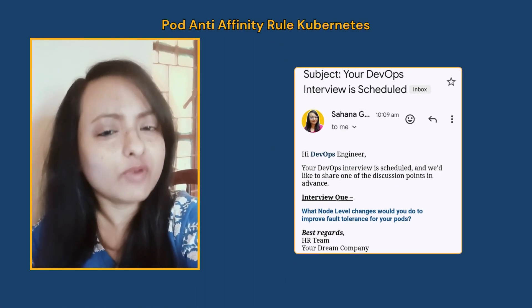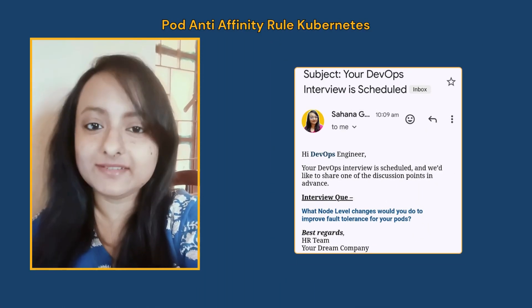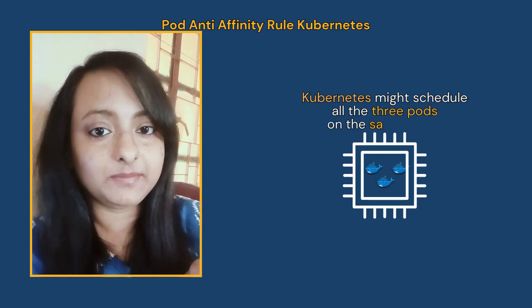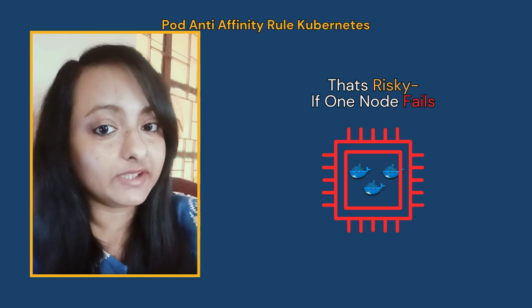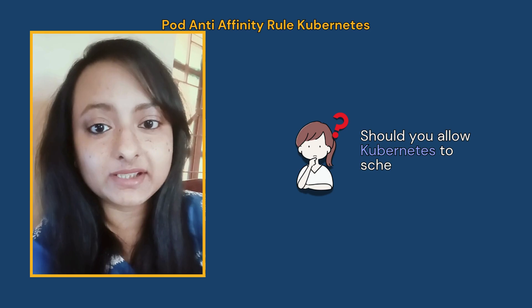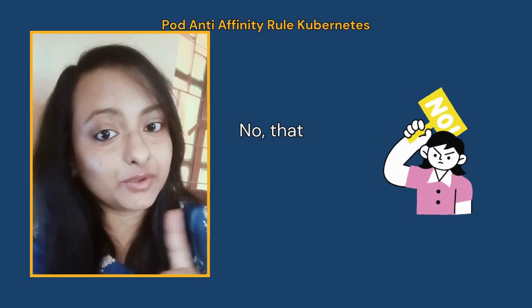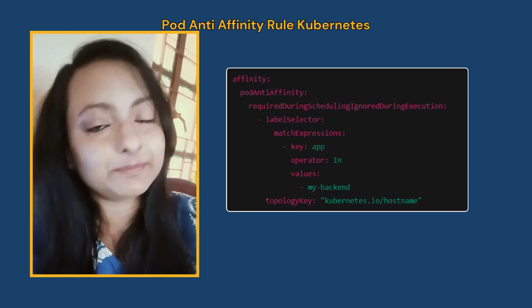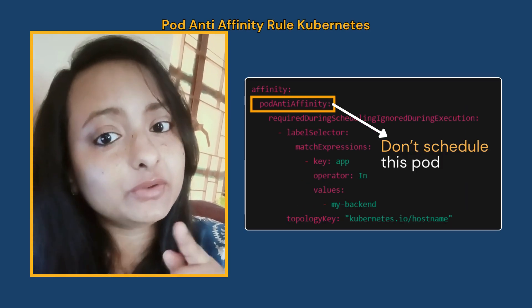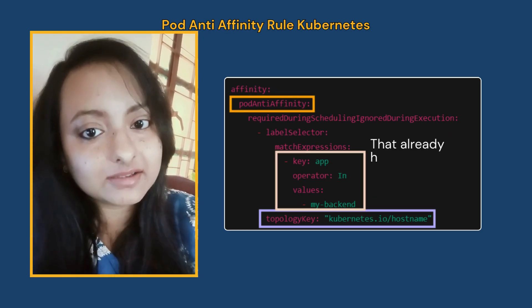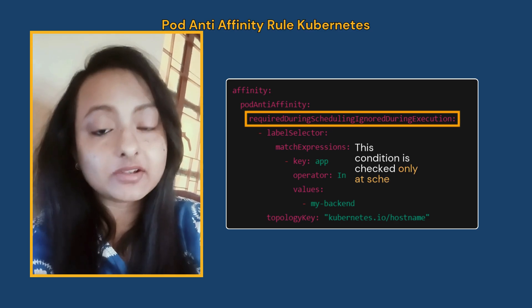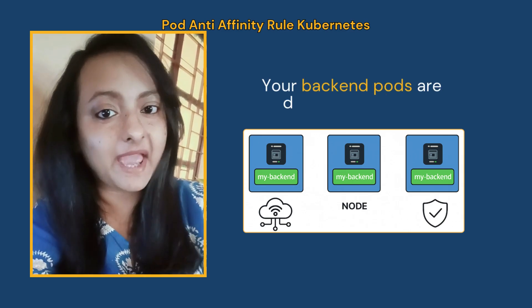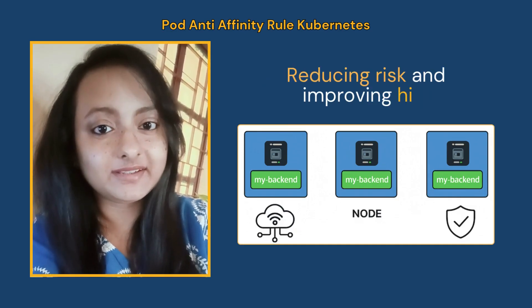In your DevOps interview you are asked: what node-level changes would you do to improve default fault tolerance of your pod? Real-world scenario: your backend service has three replicas, and by default all three pods might get scheduled on the same node — that's risky because if one node fails, the whole system goes down. Should you let Kubernetes schedule all your pods on the same node? No — the feature we use here is pod anti-affinity. We add this rule in the deployment YAML: it tells Kubernetes don't schedule this pod on a node that already has another pod with the label 'app: backend'. This rule is checked only at scheduling time, so all your backend pods are spread across nodes, reducing risk and improving high availability.